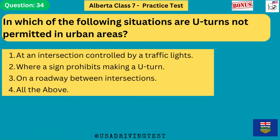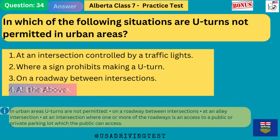In which of the following situations are U-turns not permitted in urban areas? 1. At an intersection controlled by traffic lights. 2. Where a sign prohibits making a U-turn. 3. On a roadway between intersections. 4. All the above. The answer is 4: all the above. In urban areas, U-turns are not permitted on a roadway between intersections, at an alley intersection, or at an intersection where one or more roadways is an access to a public or private parking lot.